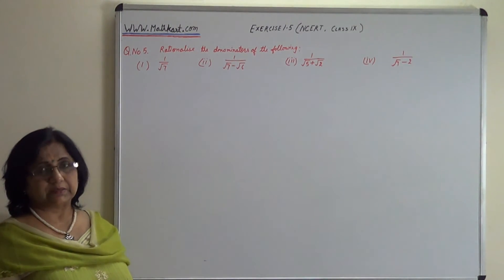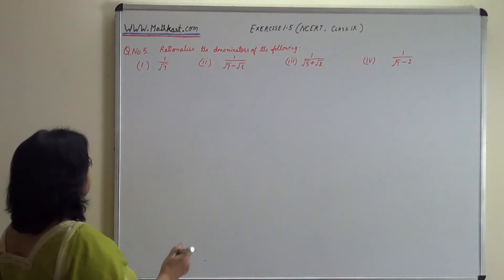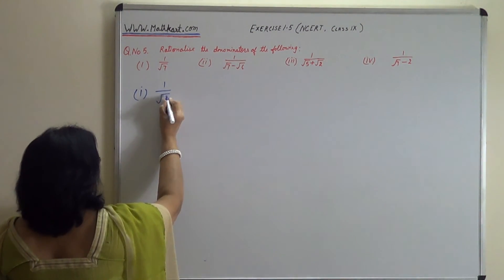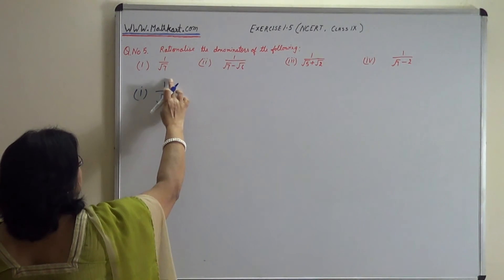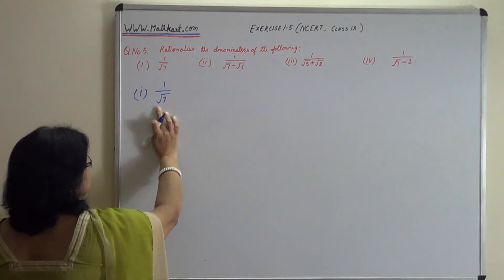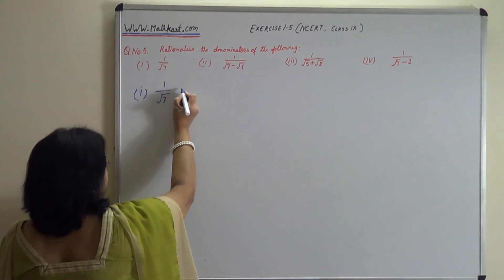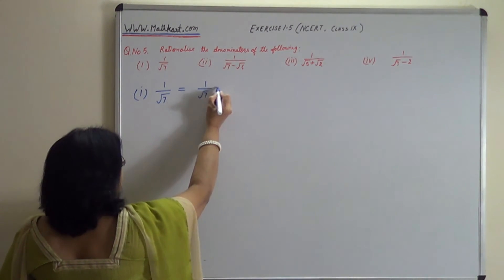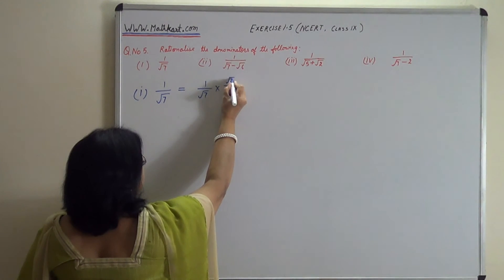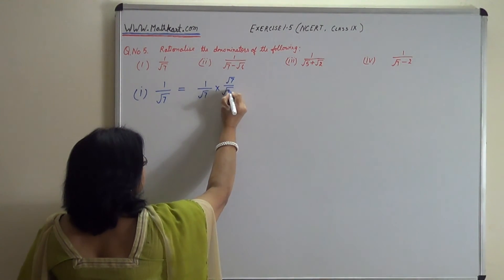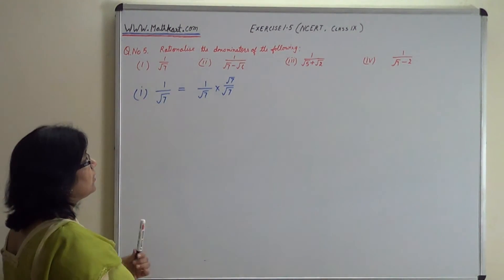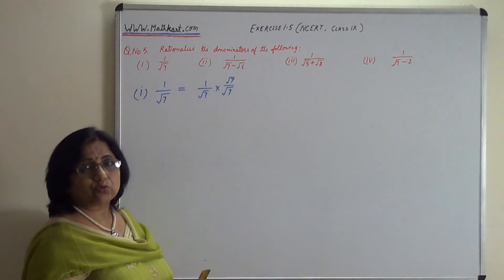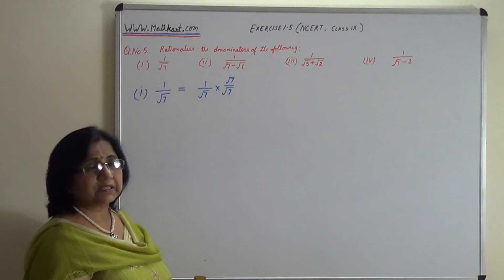The first part is 1 upon root 7. What do we need to do with numerator and denominator? Since the denominator is root 7, we multiply both numerator and denominator by root 7. So it equals 1 upon root 7 into root 7 upon root 7, with both numerator and denominator multiplied by root 7.